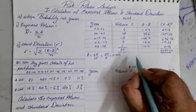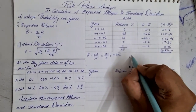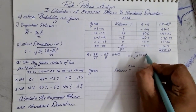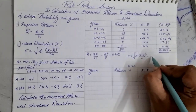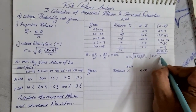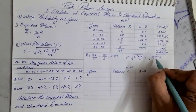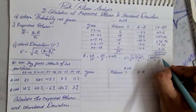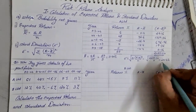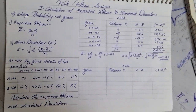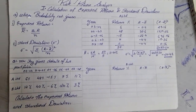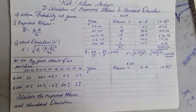Now let us find the standard deviation. The formula is the square root of Σ(r − r̄)² / n, which comes to the square root of 2085.20 / 5. When you divide and press the square root, we get a final answer of 20.42. So we finished with Part A: expected return is 11.4% and standard deviation is 20.42.